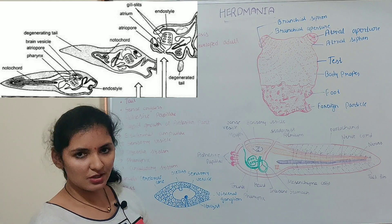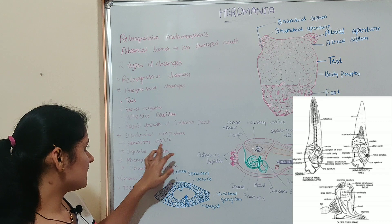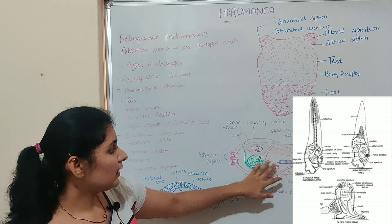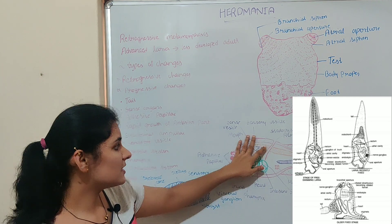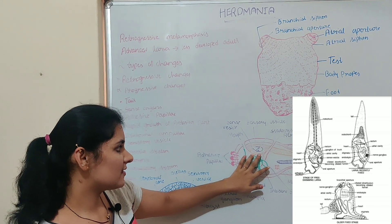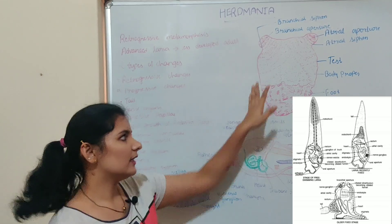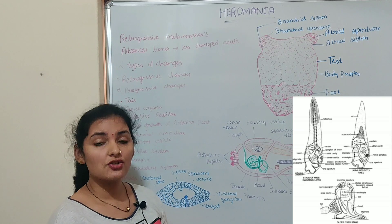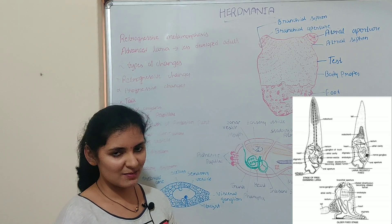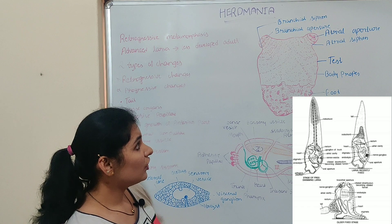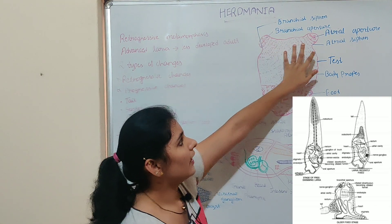The next structure undergoing progressive changes is the sensory vesicle. Part of the sensory vesicle present in the larva becomes the cerebral ganglion in the adult. So in the adult, a simple cerebral ganglion is present, which lies between the mouth and the atrial siphon.